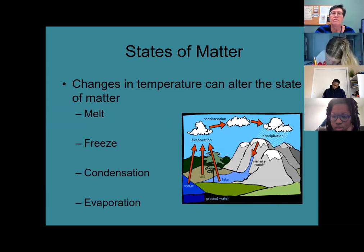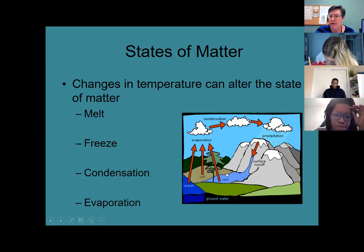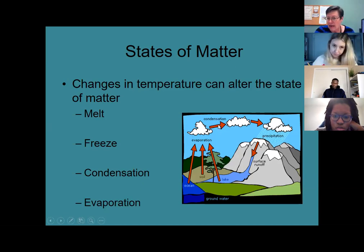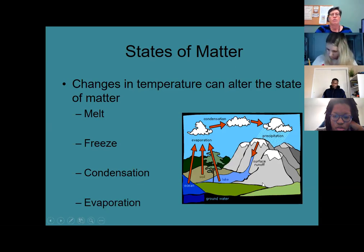Here's an illustration: we see a lake, so water is in its liquid state. The sun heats it, so it evaporates. It cools and condenses in clouds and then rains. If it got cold enough, it could freeze.